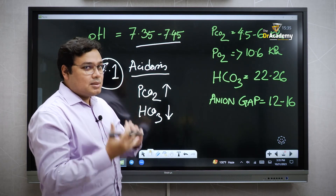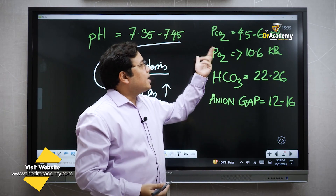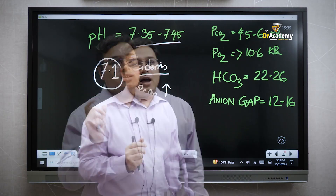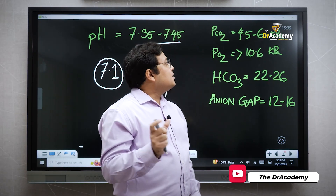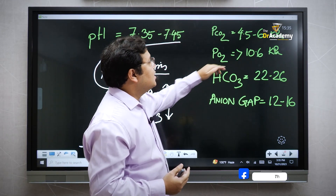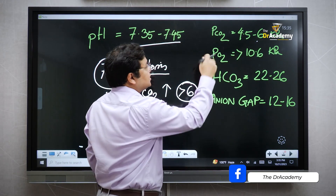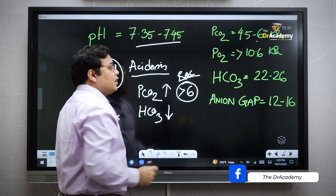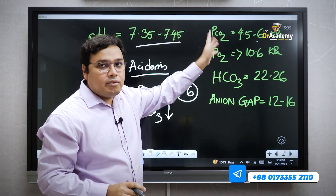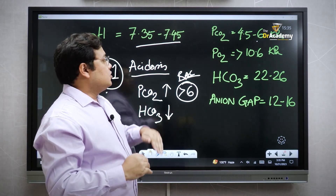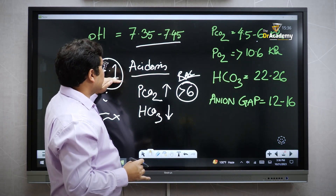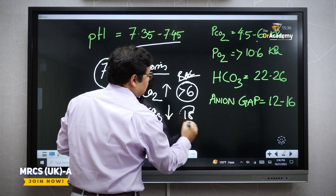The normal value of CO2 is 4.5 to 6 kPa. To classify respiratory acidosis, the partial CO2 level needs to be more than 6 kPa. For metabolic acidosis, the CO2 will be normal within that range, but the bicarbonate level needs to go down. The normal value of bicarbonate is 22 to 26 mmol/L, so below 22 — for example 18 — we can call it metabolic acidosis.